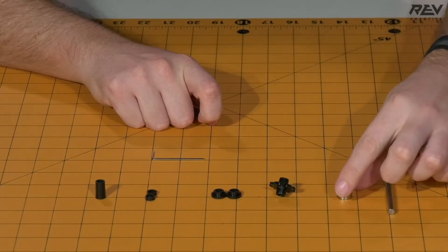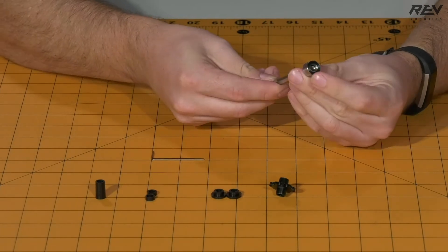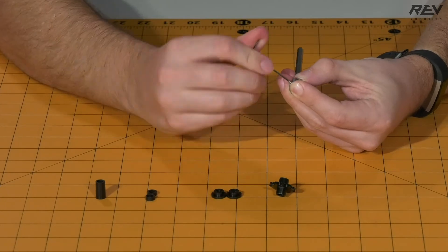To get started with the step, take your shaft collar and the hex shaft. Put the shaft collar flush on the end of the hex shaft and tighten it in place.